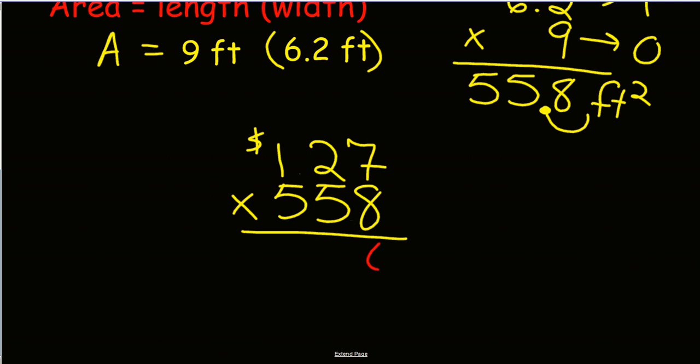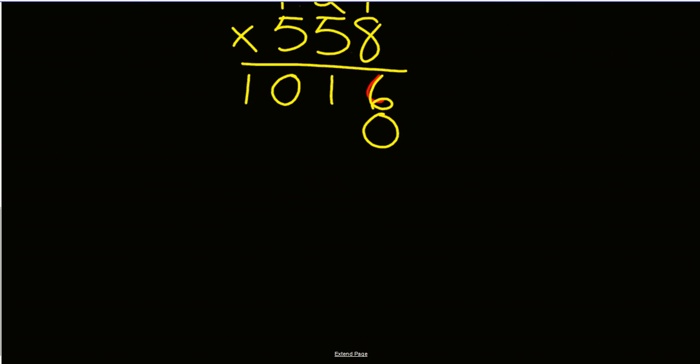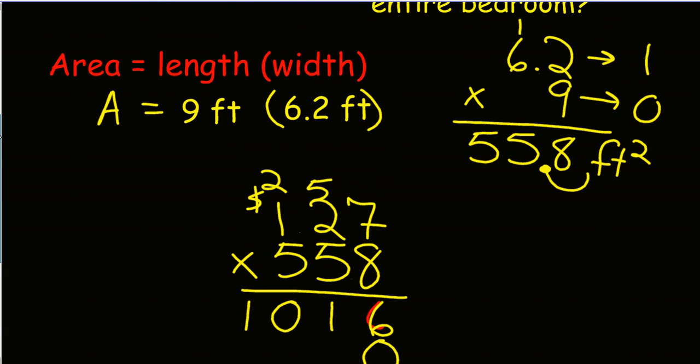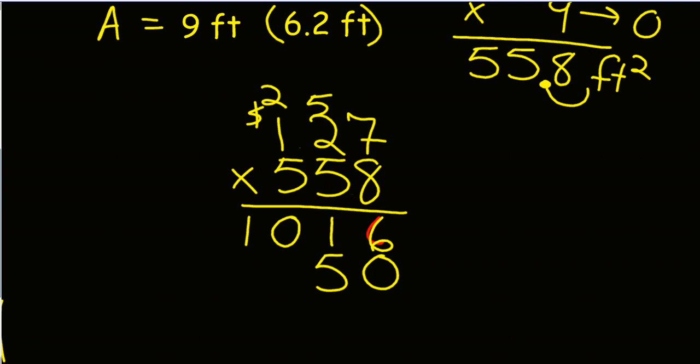8 times 7 is 56. Whoops, let's use yellow. Carry my 5. 8 times 2 is 16, plus 5 is 21. 8 times 1 is 8, plus 2 is 10. And then I go on to my next number. 5 times 7 is 35. Carry my 3. If you want, you can erase the numbers that you had carried in the previous round. 5 times 2 is 10, plus 3 is 13. 5 times 1 is 5, plus 1 is 6. And now, since I'm in the hundreds place, I'm going to drop down two zeros,